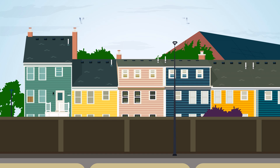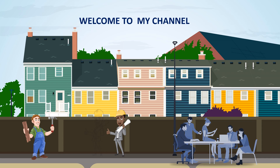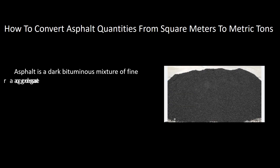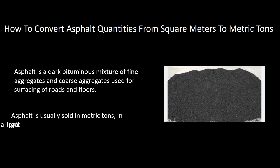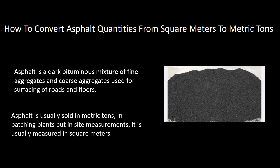Hello viewers, welcome to my new channel. In today's tutorial we will learn how to convert asphalt quantities from square meters to metric tons. Asphalt is a dark bituminous mixture of fine aggregates and coarse aggregates used for surfacing of roads and floors. Asphalt is usually sold in metric tons in batching plants, but in site measurements it is usually measured in square meters.